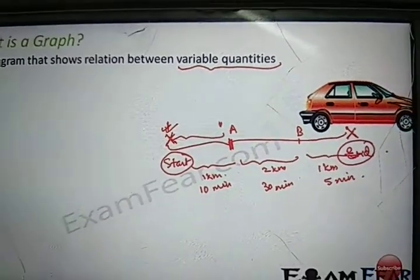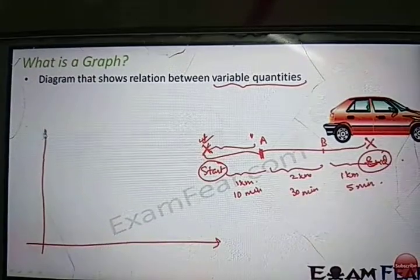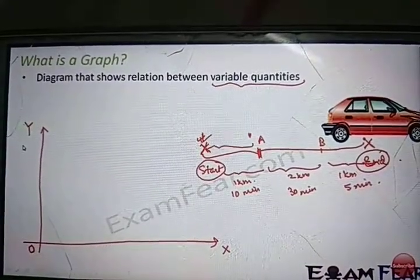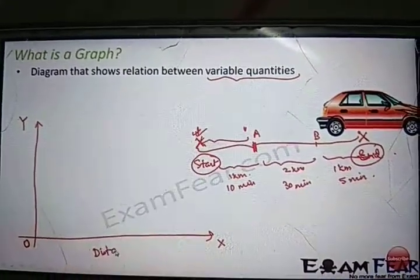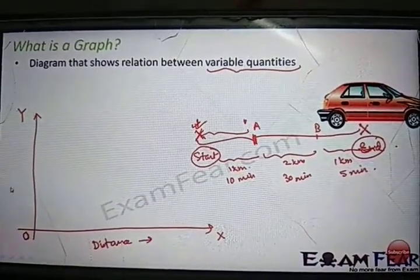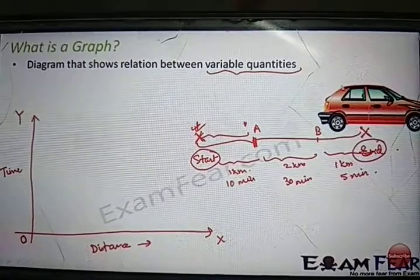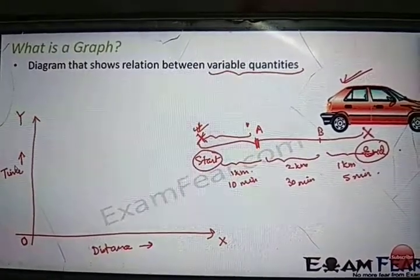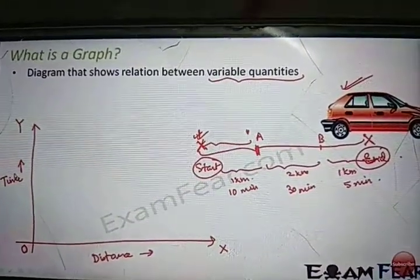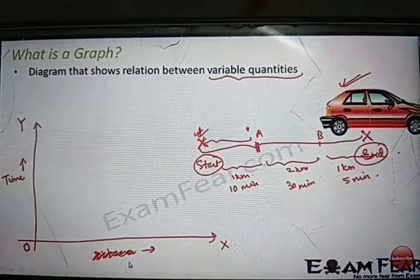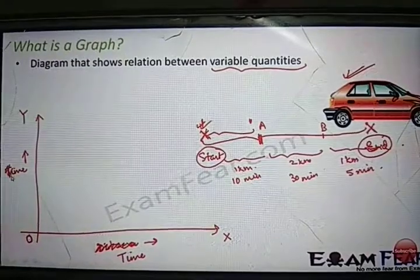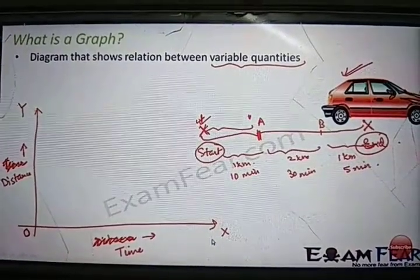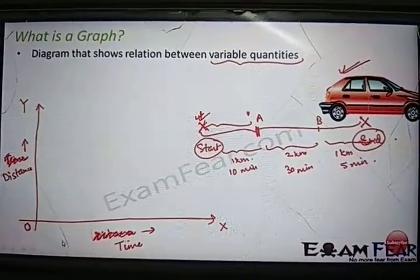Now, if we want to plot this through a graph, we plot a graph like this. This point is termed as the origin. This is the x-axis and this is the y-axis. We take distance along one axis and time along the other. The other variable is time. Distance and time are the two variable quantities. We always take time along the x-axis and distance along the y-axis. That is the convention that is followed. So here also we take time along the x-axis and distance along the y-axis.